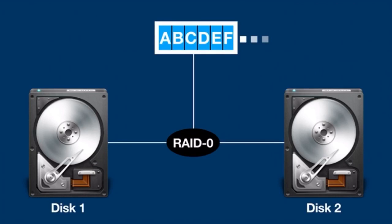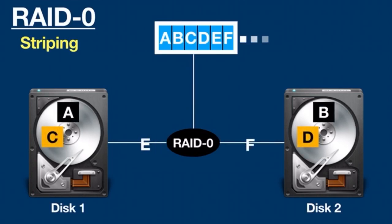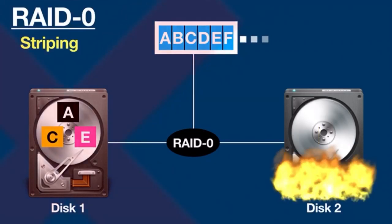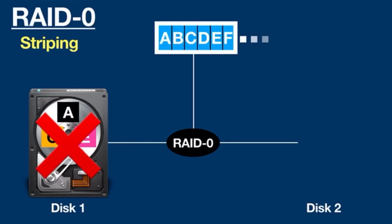RAID has different levels, however not all levels provide redundancy. RAID 0 uses striping, meaning data is spread or split up between two disks. It provides no redundancy and offers the best performance in both read and write operations, but it is not fault tolerant. If one drive fails, all data in the RAID 0 array will be lost.